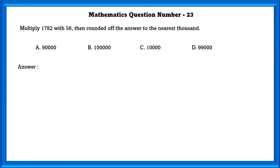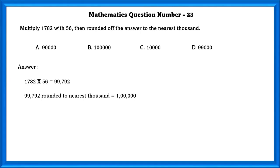Mathematics question number 23: Multiply 1,782 with 56 and then round off the answer to the nearest thousands. Multiplying 1,782 with 56 we get the answer 99,792, and then rounding off to the nearest thousands we get 1 lakh.